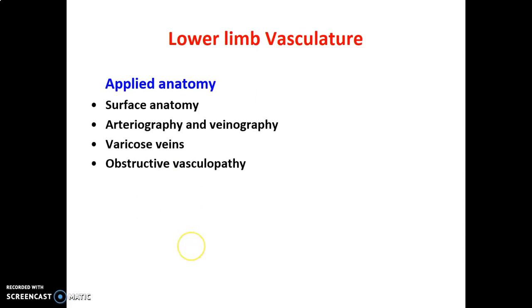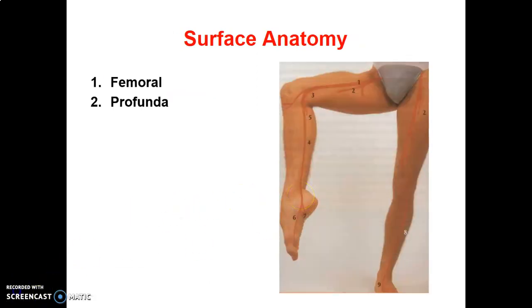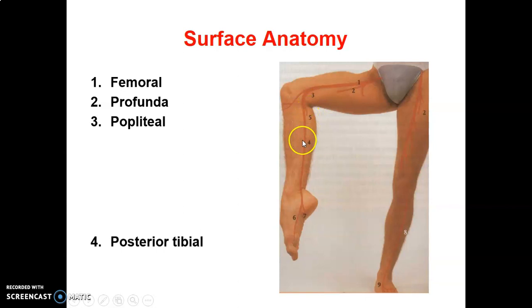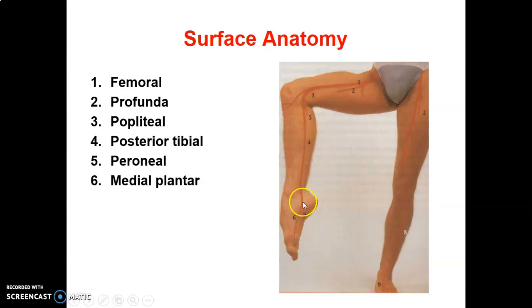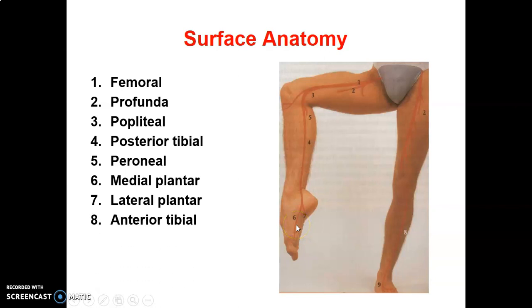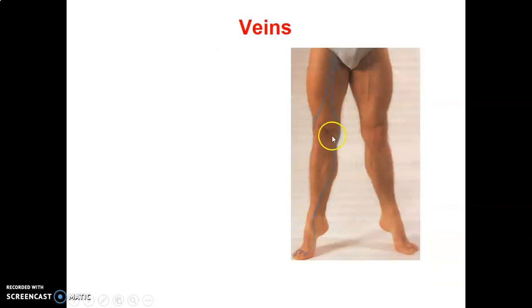There are clinical considerations including varicose veins and deep vein thrombosis. Regarding surface anatomy, the key vessels are the femoral artery, popliteal artery, posterior tibial artery, medial plantar, lateral plantar, and anterior tibial vessels.